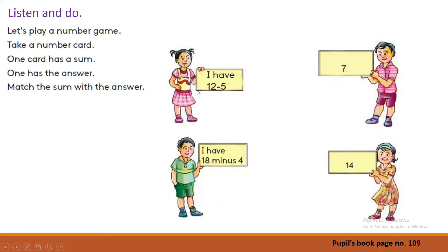Let's look at these number cards. This girl has a card. What is it? She says: I have 12 minus 5. What is the answer for that? Very good — this boy has the answer: 7.